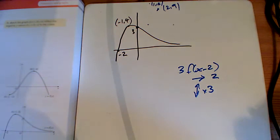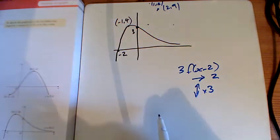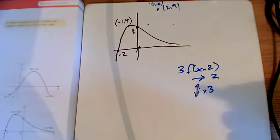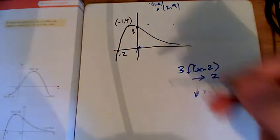And this point here was at minus 2, so move it two places to the right there, and then 3 times higher. Well, 3 times higher than 0 is still at 0, isn't it?